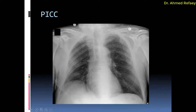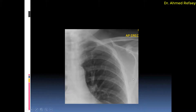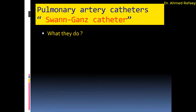This is an example of malpositioning of a peripherally inserted central catheter, malpositioned in the left internal jugular vein. As you see, the catheter comes from the left antecubital vein to the axillary vein to the subclavian, but instead of going to the left brachiocephalic vein, it is directed into the left internal jugular vein.